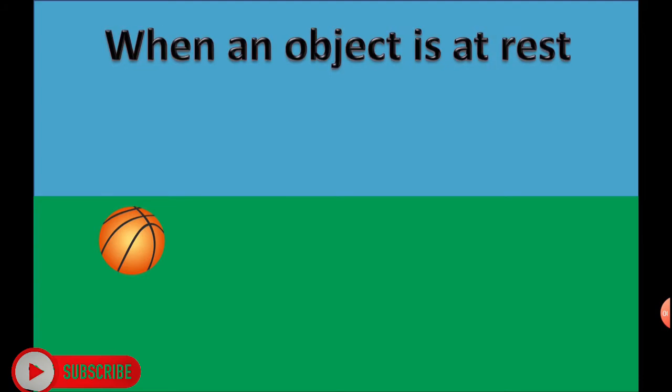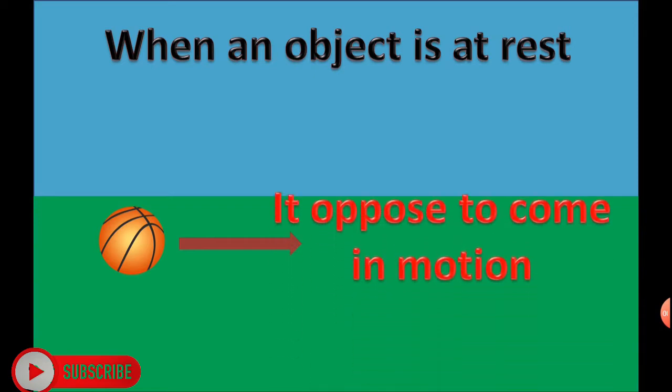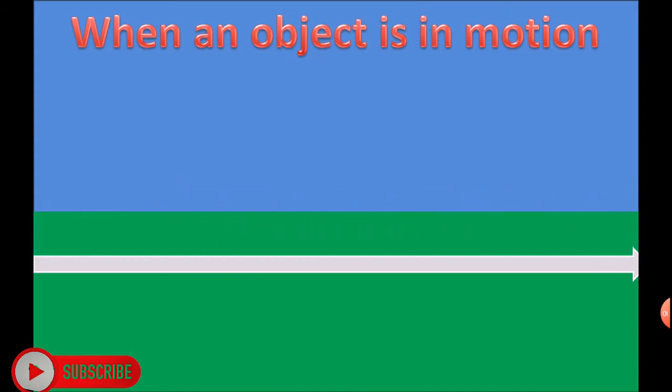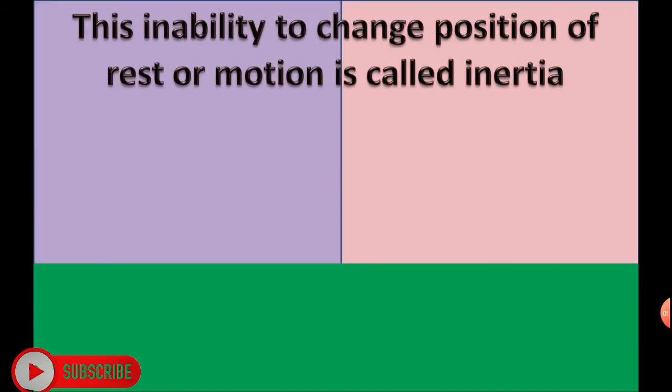When an object is at rest, it opposes to come in motion. When an object is in motion, it opposes to come at rest. This inability to change position of rest or motion is called inertia.